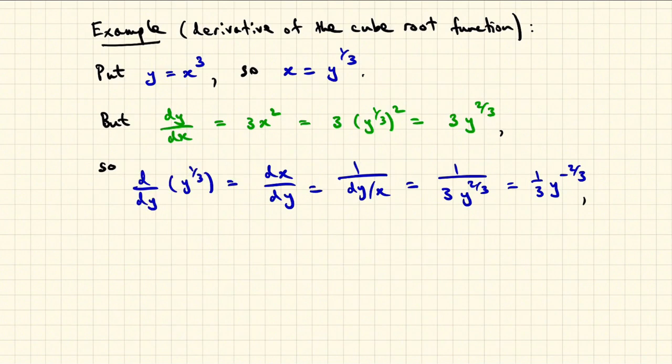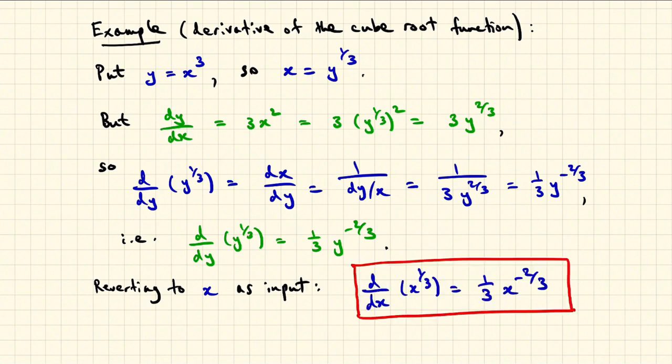At the same time, dx dy is just d dy of y to the 1 third. Reverting to x as a typical input, we get d dx of x to the 1 third is 1 third of x to the minus 2 thirds. Happily, this is consistent with the formula for the derivative of x to the n when n equals 1 third. So everything is working nicely.